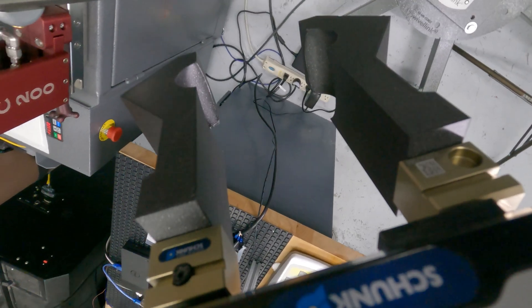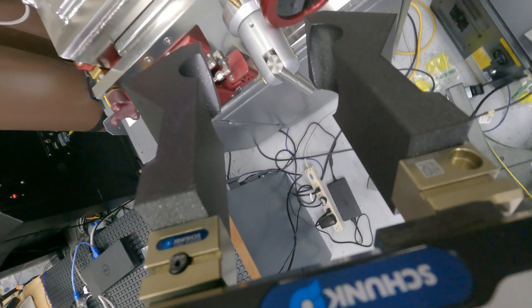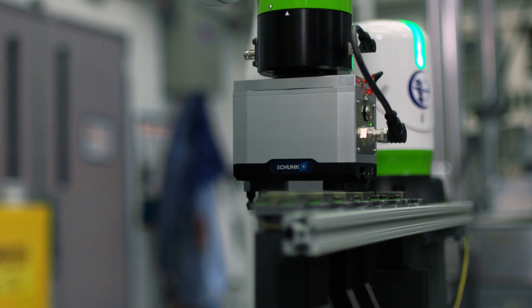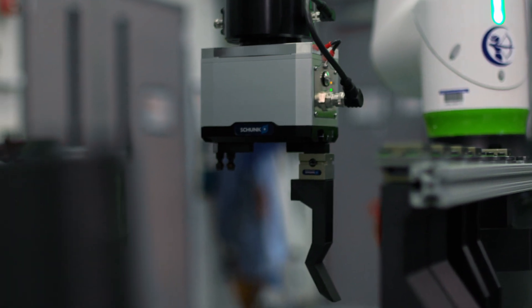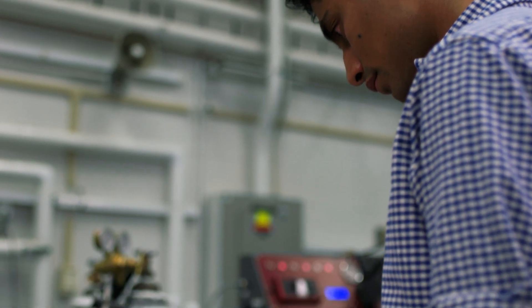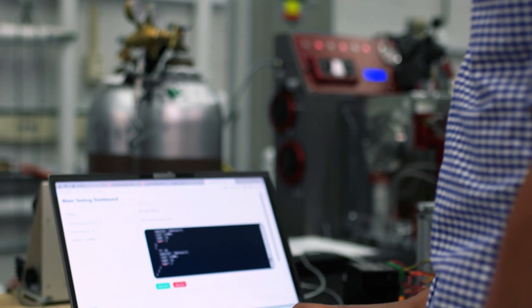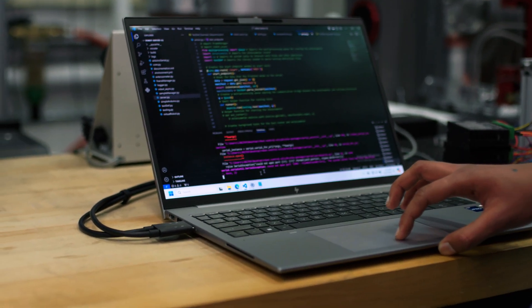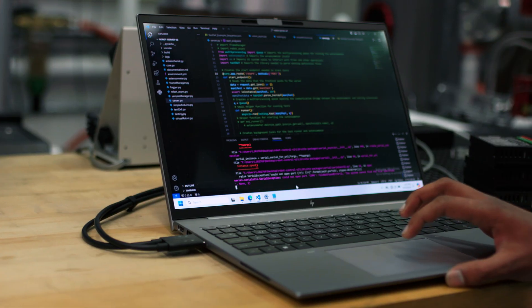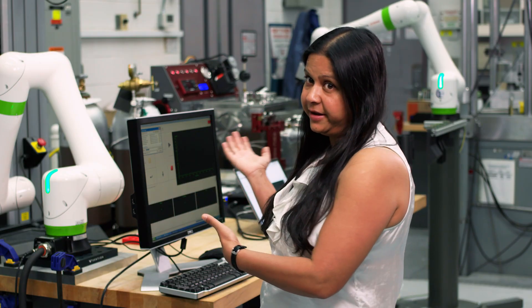To train AI models, we need a lot of data, and for that, we need a lot of experiments. Robots can do experiments faster, precisely, and 24/7. We don't have to worry about doing repetitive tasks and we can focus on problem solving. We train our AI models using a combination of experimental data and computational data, and we also validate our model by data that we generate using our robotics laboratory.